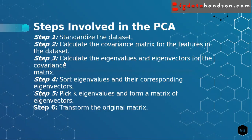In step three, we calculate the eigenvalues and eigenvectors for the covariance matrix. What are eigenvalues and eigenvectors? Eigenvectors can be described with the phrase 'the direction that doesn't change direction.' When we are doing some transformations, the eigenvectors do not change direction. Based on the eigenvalues, we pick the principal components.